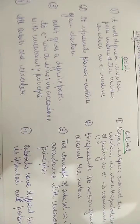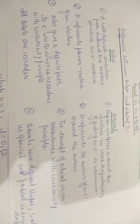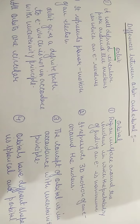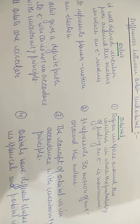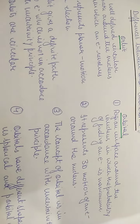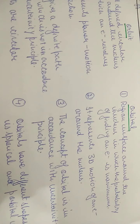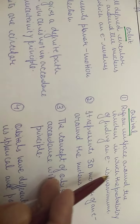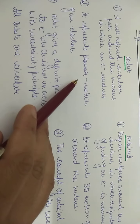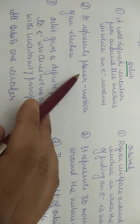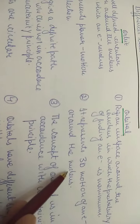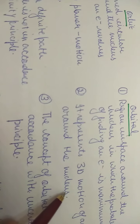An orbit is a well-defined circular path around the nucleus in which an electron revolves. An orbital, on the other hand, is a region in space around the nucleus in which the probability of finding an electron is maximum. An orbit represents planar motion of the electron in a specific plane, but an orbital is three-dimensional.